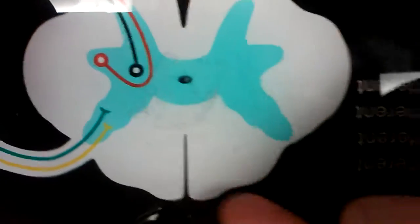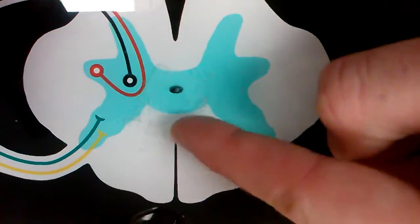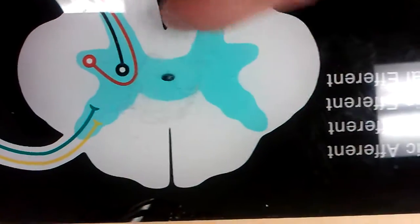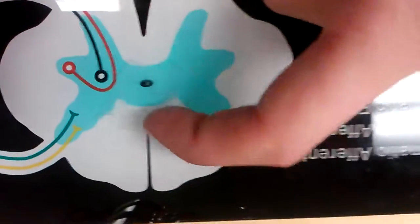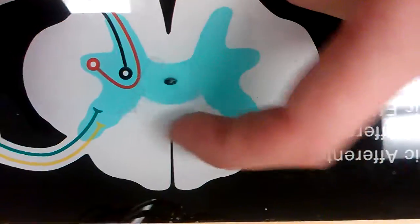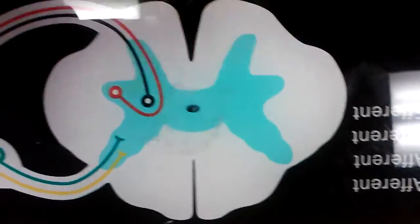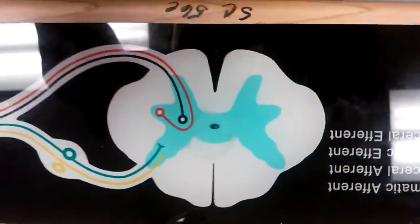And then the white commissure is between where the sulcus starts and the fissure starts. So it's the white part right in here, and the white part right in there is the white commissures. And that's all for the spinal cord. Wait, just kidding. No, it's not.